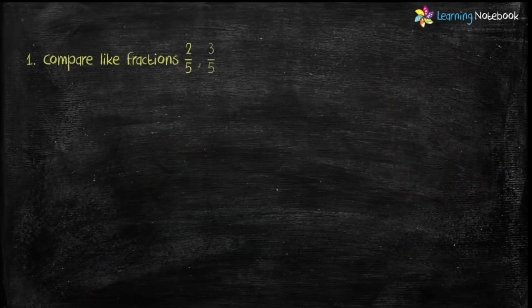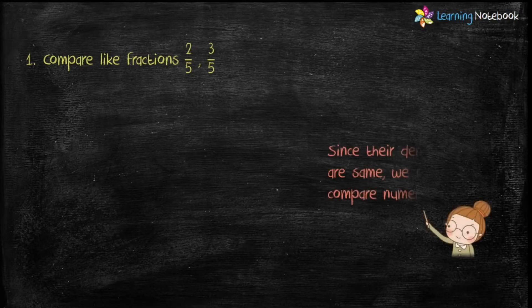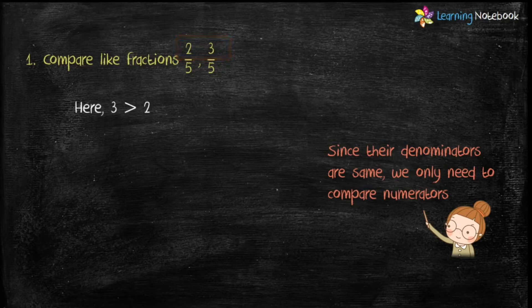Let's solve a few questions. Question number 1: compare like Fractions 2 by 5 and 3 by 5. Since their denominators are same, we only need to compare their numerators. Here, 3 is greater than 2. Therefore, Fraction 3 by 5 is greater than Fraction 2 by 5.